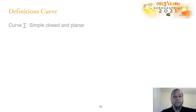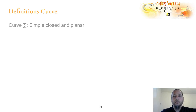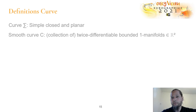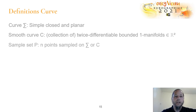First, some term definitions. A curve sigma is simple if it's a single connected component, closed if the degree of vertices everywhere is 2, and lying in the plane in two dimensions. A different definition is for smooth curve C: it can be a collection — so it can be multiply connected — it must be twice differentiable in order to be smooth, and bounded means that it can be open and one-manifold in the plane. The sample set P is then a number of points sampled on either sigma or C.